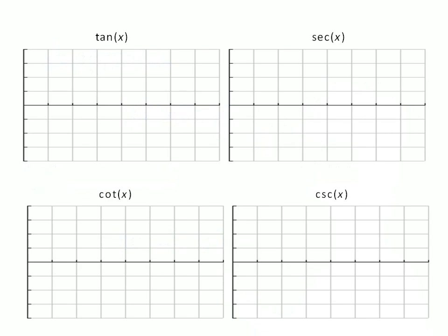Now, let me show you what I'm talking about. Consider tangent, secant, cotangent, and cosecant. Let's suppose that someone asks you, I would like to see a sketch of these four graphs. Just show me an example of a tangent graph, secant graph, cotangent and cosecant.